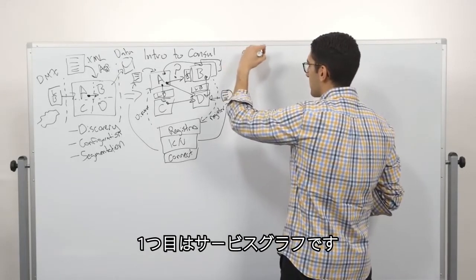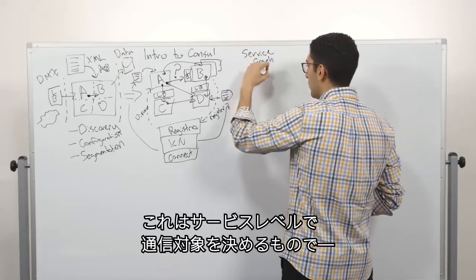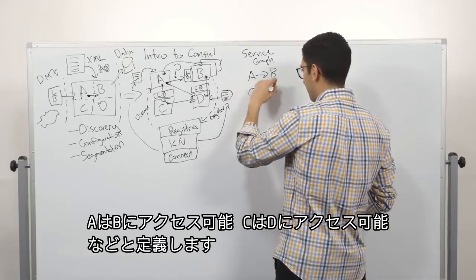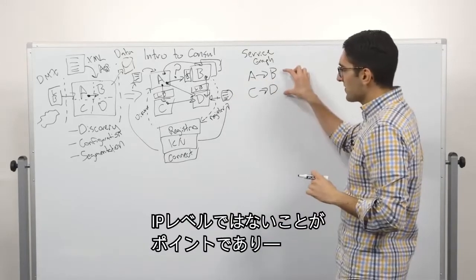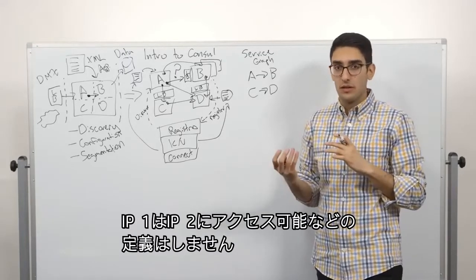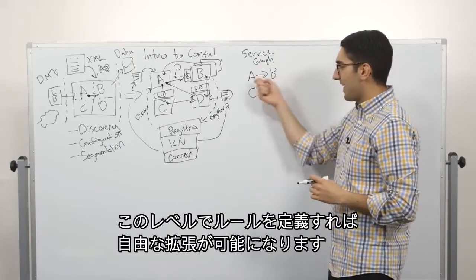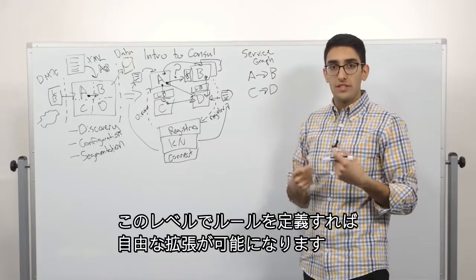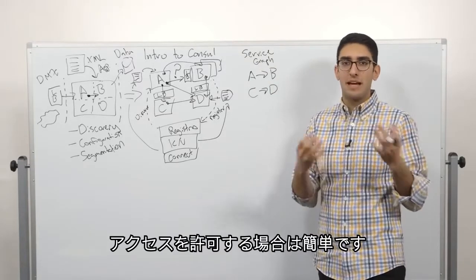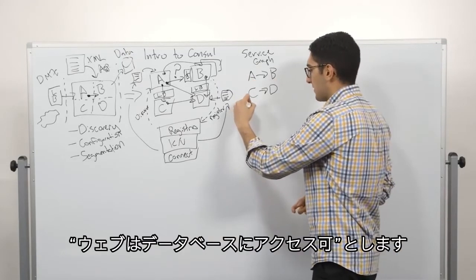And so, centrally managing the definition around who can talk to who. And what this starts with is a few different components. First, we start with what we call a service graph. And with the service graph, we define at a service level who can communicate. So we might say A is able to talk to B. We might say C is allowed to talk to D. And what you'll notice is we're not talking about IP to IP. We're not saying IP1 can talk to IP2. We're talking about service A can talk to service B.